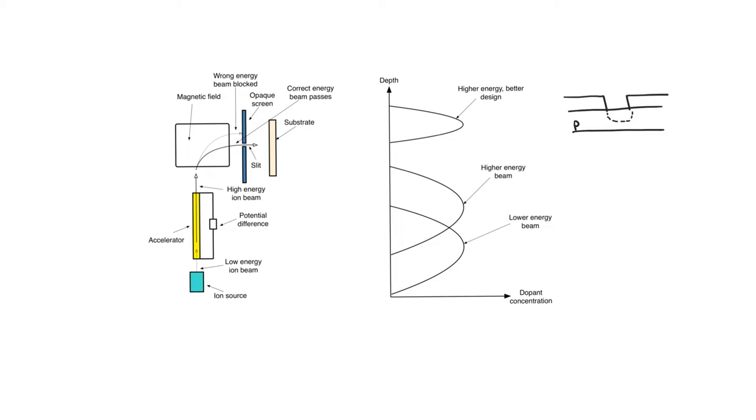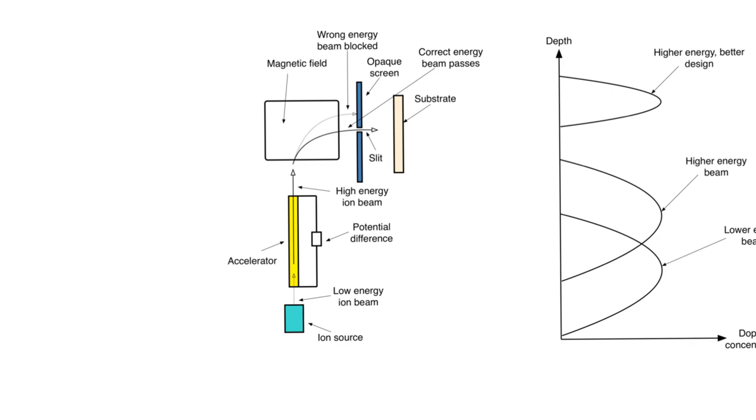One way in which we can introduce dopants into the wafer is called ion implantation. We are going to expose the surface of the wafer to ions and these ions are going to implant into the wafer, changing its nature. Let's take a look at the overall setup for ion implantation. In this case, we have a source of ions. This source of ions produces very low energy ions at the output, so when they exit the ion gun that is generating them, they are moving at a very low velocity.